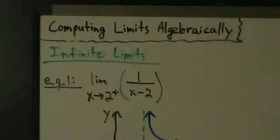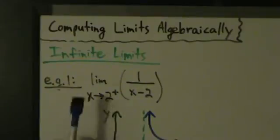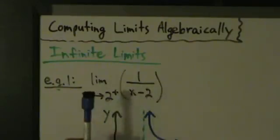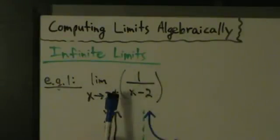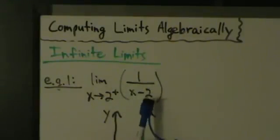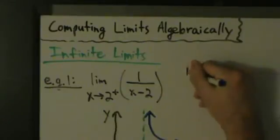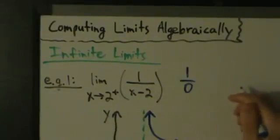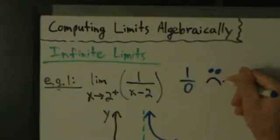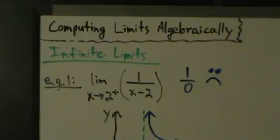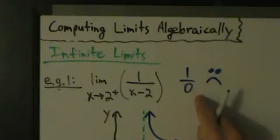So first of all, if we try direct substitution — the limit as x comes into 2 from the right of 1 over (x minus 2) — what happens? Well, the top is just 1, and on the bottom we have 2 minus 2, which is 0. So we end up with 1 over 0, which is really even worse than 0 over 0. Factoring isn't going to work because it's not 0 over 0, and there are no absolute values, so there are no tricks we can do.